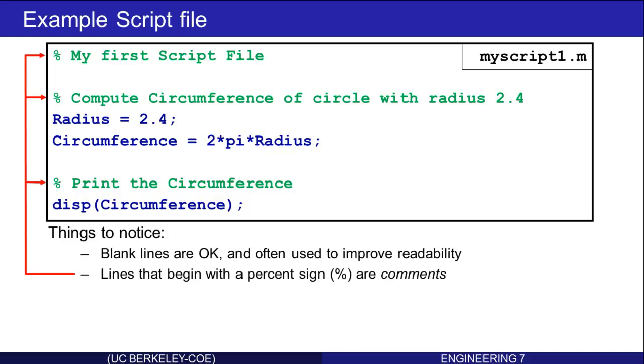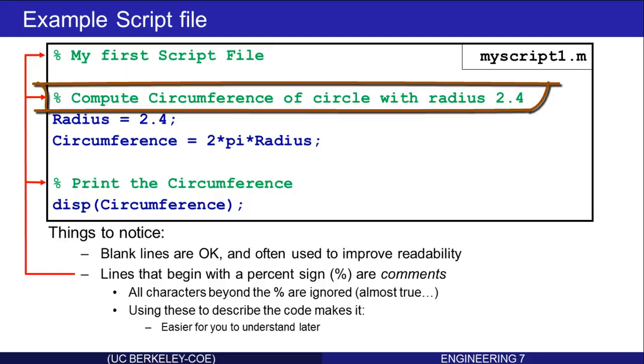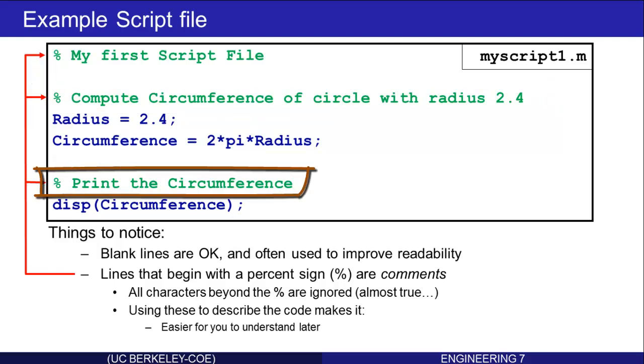Lines that begin with percent signs are called comments. Comments have the property that all characters past the percent are ignored. There's actually a little more going on, and we'll see that in a few slides. Let's look at the comments.